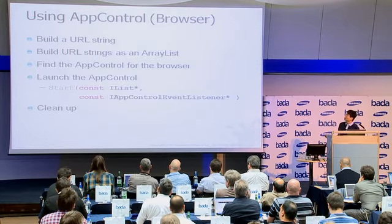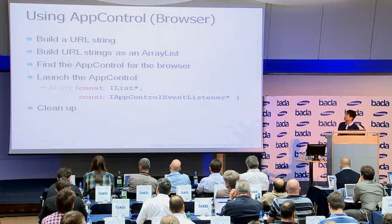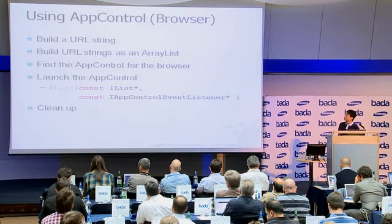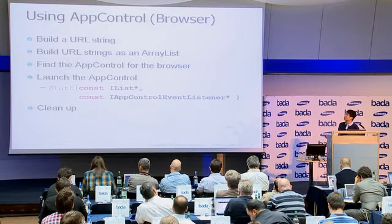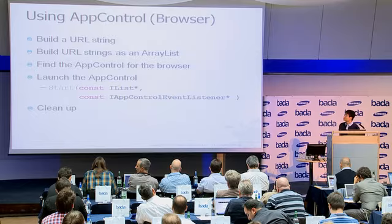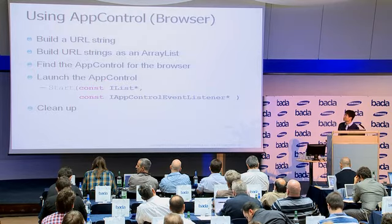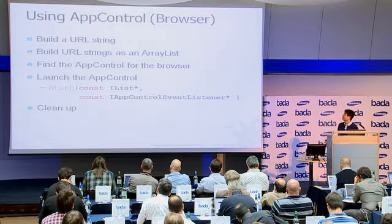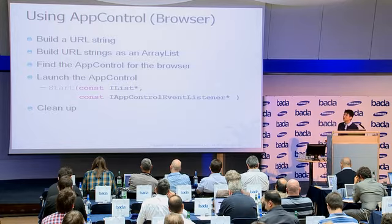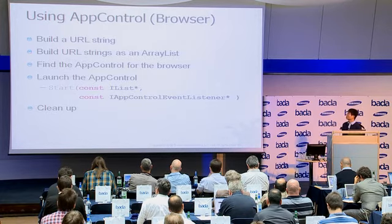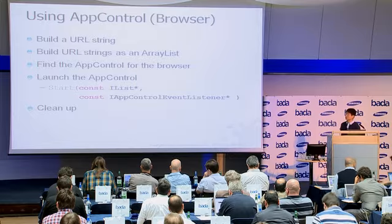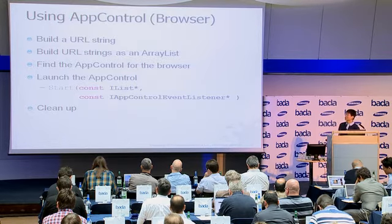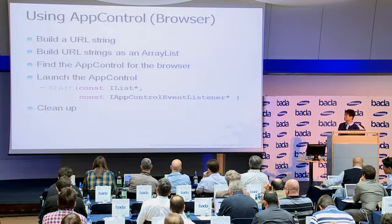The first two steps are about providing the URL. First, you provide the URL as a string, then make it into an array list. That's because the app control method handles input as an array list parameter. So I need to convert the string into an array list to pass to the app control.